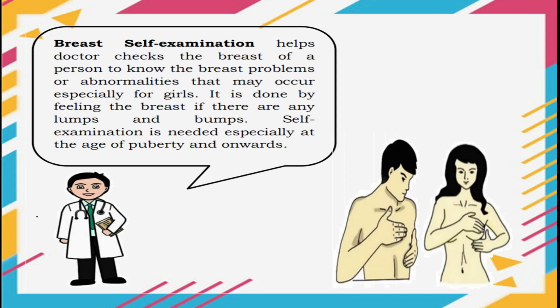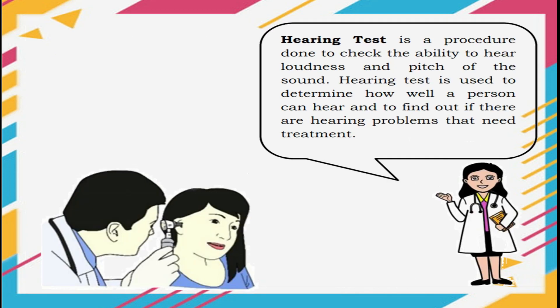Breast Examination helps the doctor check the breast of a person to identify breast problems or abnormalities that may occur, especially for girls. It is done by feeling the breast for any lumps or bumps. Self-examination is needed especially at the age of puberty. Hearing test is a procedure done to check the ability to hear the loudness and pitch of sound. It is used to determine how well a person can hear and to point out if there are hearing problems in order to take treatment.